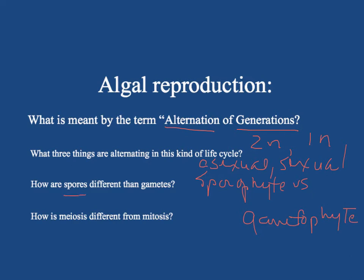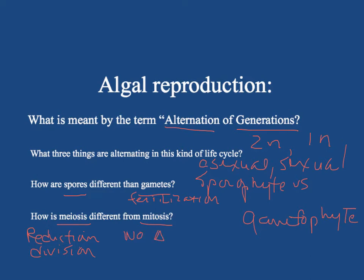Spores are reproductive cells that require no fertilization with another reproductive cell to produce a whole new adult. Gametes are reproductive cells that require fusion or fertilization in order to produce a new adult — the gametes need another gamete to fuse with to produce a new adult. Meiosis is the reduction division in terms of chromosome number, going from a 2n chromosome number to a 1n chromosome number. Mitosis is simply a cell division where the chromosome number remains constant — there's no change in chromosome number in mitosis.